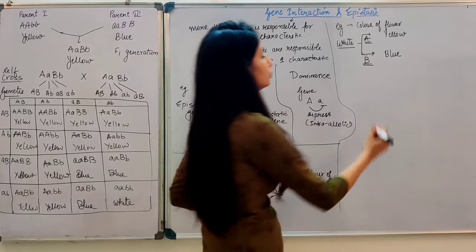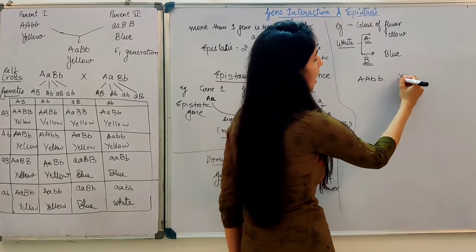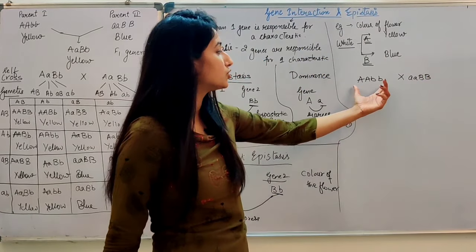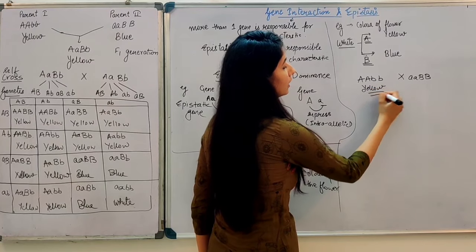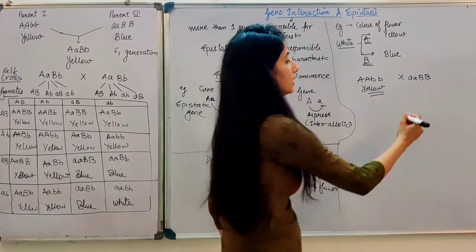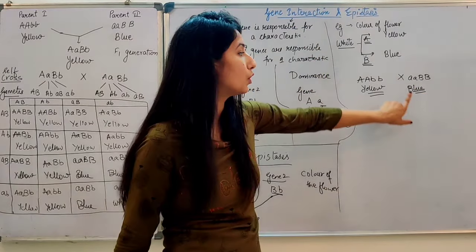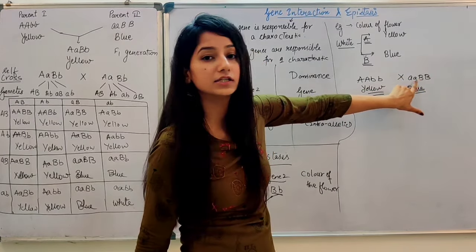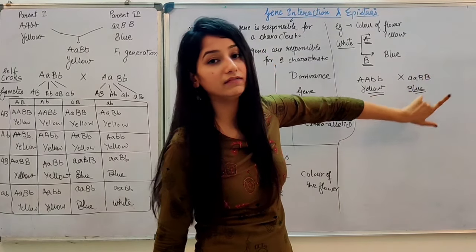If gene A is expressed, then the flower will be yellow color. If gene B is expressed, then the flower will be blue color. If the parent is AABB, then the flower will be yellow because gene A is expressed. If the parent is aaBB, then the flower will be blue because gene B is expressed.